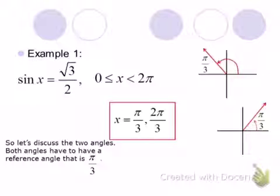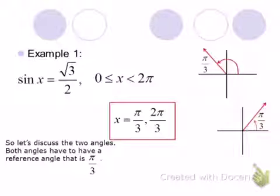And when you get to calculus, you'll do this a lot in relationship to the derivatives. So sine of x equals square root of 3 over 2 on the interval from 0 to 2 pi has two solutions: pi over 3 and 2 pi over 3.